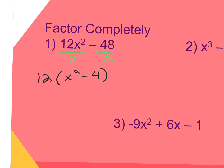Now we've already done this — when we covered the difference of two squares in the notes. We have to keep going, because what we got in the parentheses is the difference of two squares, and this can be factored further. This goes into x plus 2 and x minus 2. It pays off recognizing that x squared and 4 are both perfect squares — just square root them. Don't forget to write your GCF in front of what you factored.